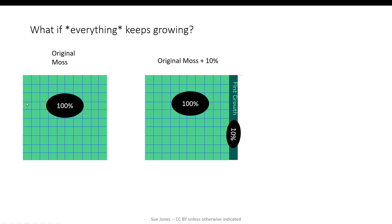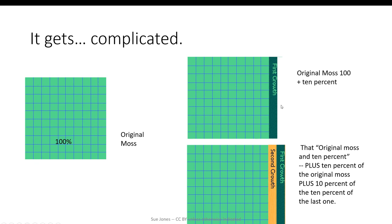So this hundred square centimeter clump of moss in the garden grows 10% of the whole patch every month. It gets complicated. The first month I could figure out 10% of 100 is 10 and add that back to get 110 square centimeters. But the next month we have the original moss and 10% plus another 10% of the original moss plus 10% of the 10% that grew the last month. What?